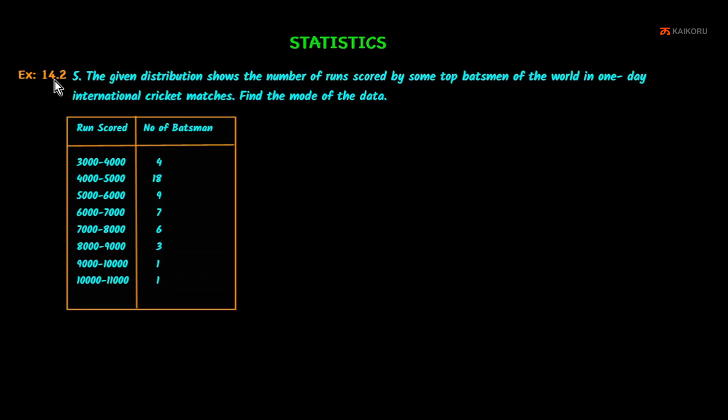Statistics. Exercise 14.2 Problem No. 5. The given distribution shows the number of runs scored by some top batsmen of the world in one-day international cricket matches. Find the mode of the data.